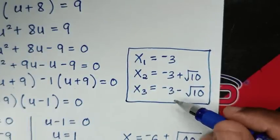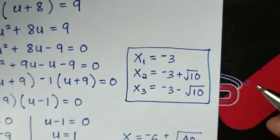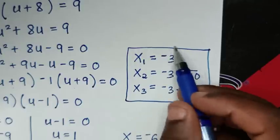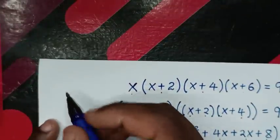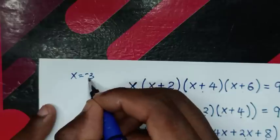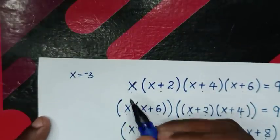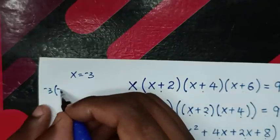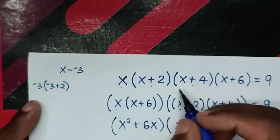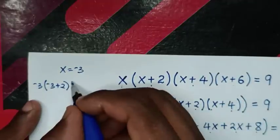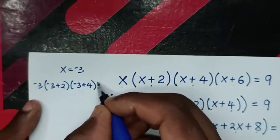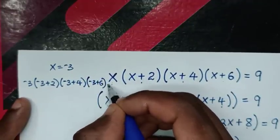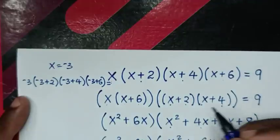To verify, we check the solution x = −3 by substituting into the original equation: (−3)(−3+2)(−3+4)(−3+6) = 9.